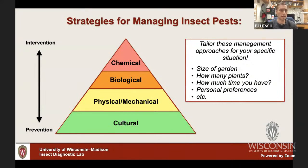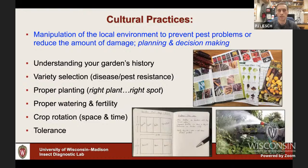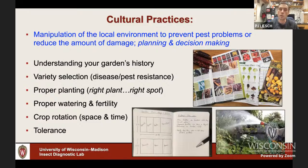Now let's switch gears to general strategies for managing insect pests. There's a range of approaches from cultural all the way to chemical — spanning prevention to intervention — and you have to tailor these to your specific situation. Cultural practices manipulate the environment to help prevent issues: choosing right plants or pest-resistant cultivars, keeping a gardening journal to track what you planted and what problems you had, crop rotation, proper plant care (fertility, watering), making sure you have the right plant in the right spot, and in some cases simply tolerating a bit of damage.